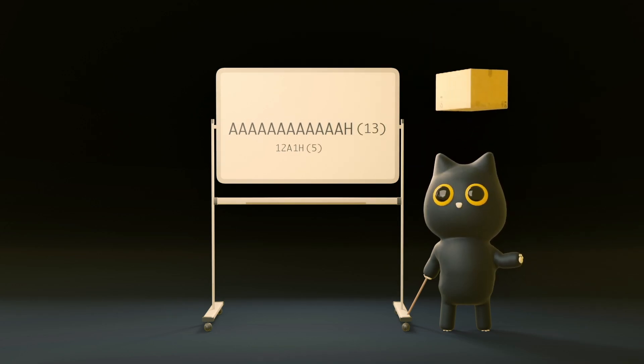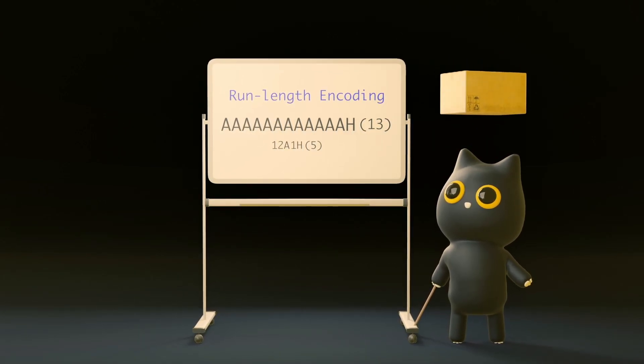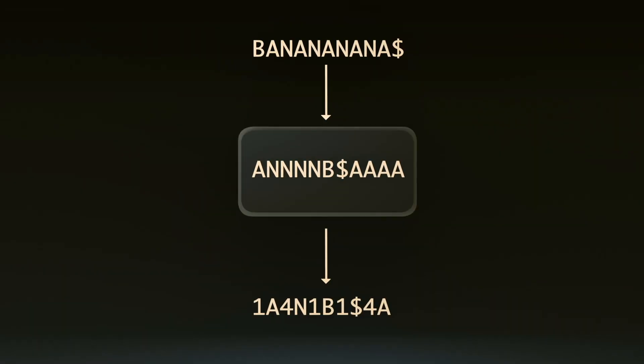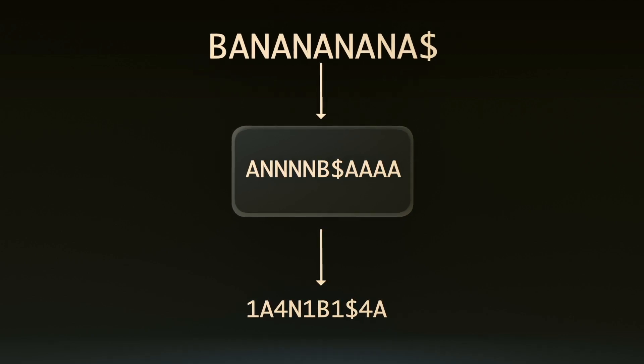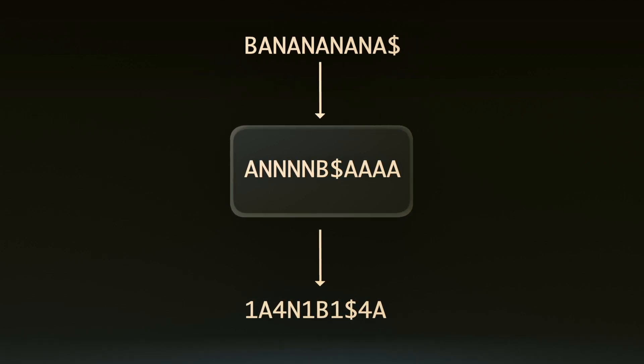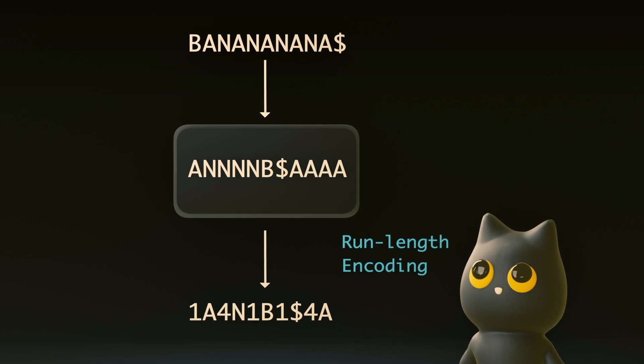This compression technique is known as run length encoding. We are taking the runs of data, which are the consecutive occurrences of the same letter, and representing it as the data value itself and its count. The question is, is there an algorithm that allows us to rearrange arbitrary text into a form where run length encoding can be best performed?